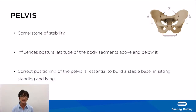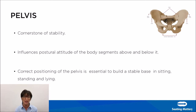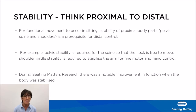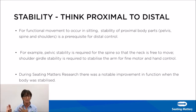The pelvis is the cornerstone for stability. If we can stabilize the pelvis when we put someone in a chair, it influences the attitude of the body above and below it, so stabilizing the pelvis is key for good sitting. Correct positioning of the pelvis is essential to build a stable base in sitting, standing, or lying. When we think of stability, we think proximal to distal - stability of the proximal parts of the body is a prerequisite to distal control. For example, pelvic stability is required for the spine so that the head is free to move, and the shoulder girdle must be stable for hand function. Our research found a notable improvement in function when the body was stabilized.